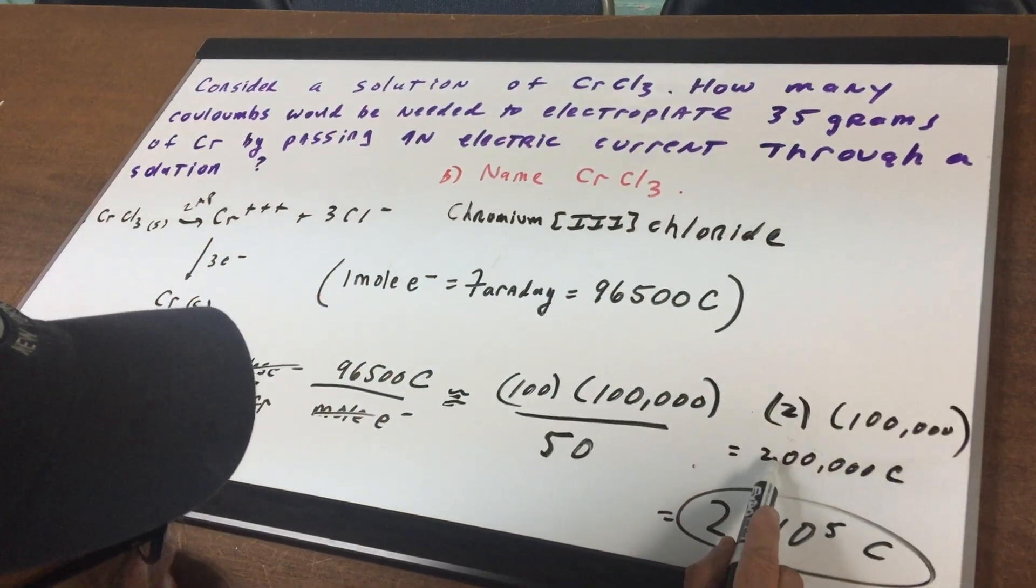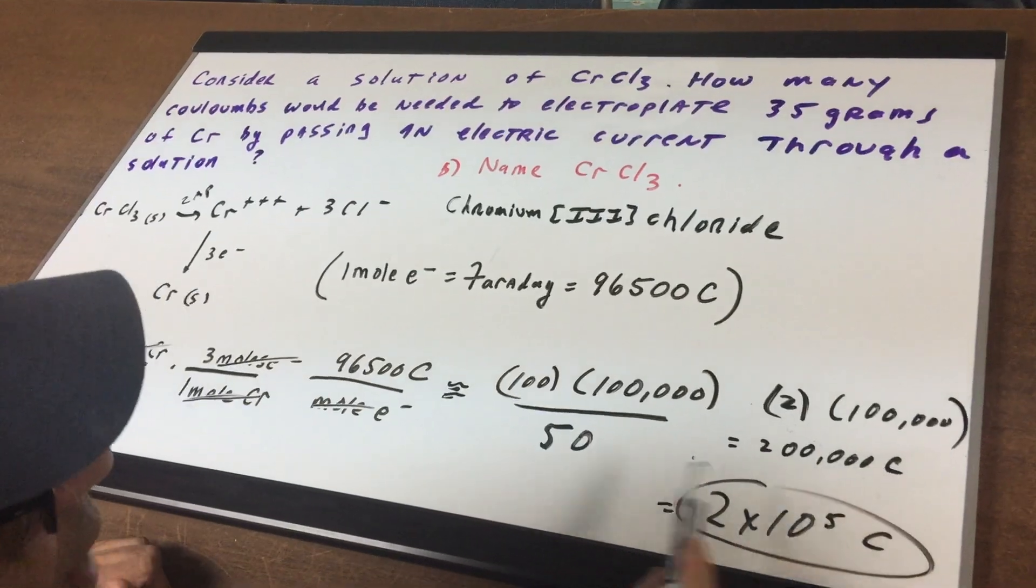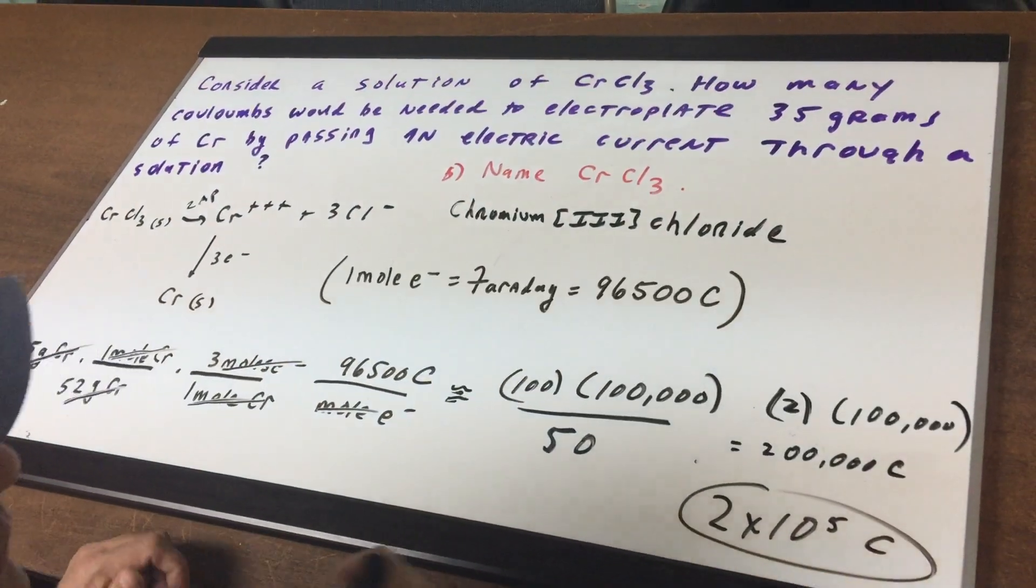Or if you put the decimal here, 1, 2, 3, 4, 5, you get 2 times 10 to the 5th coulombs.